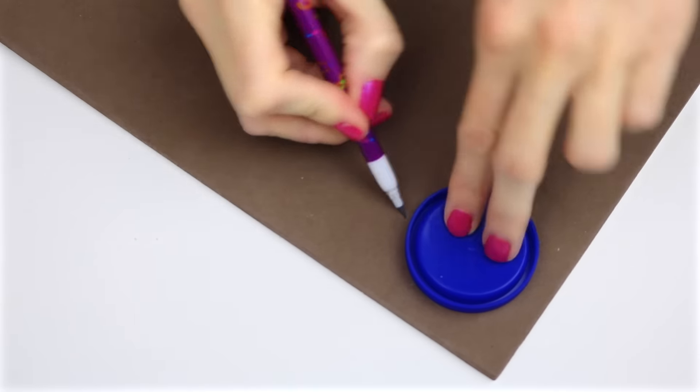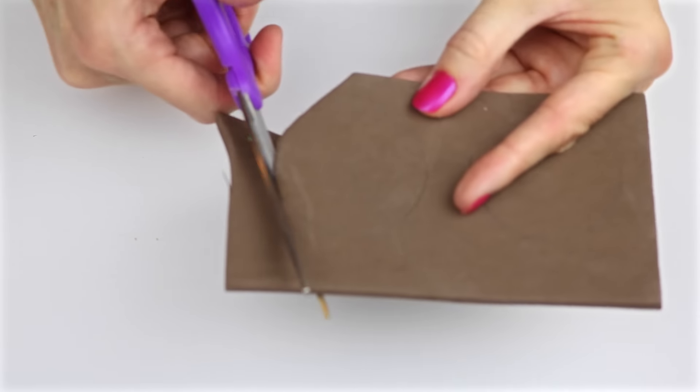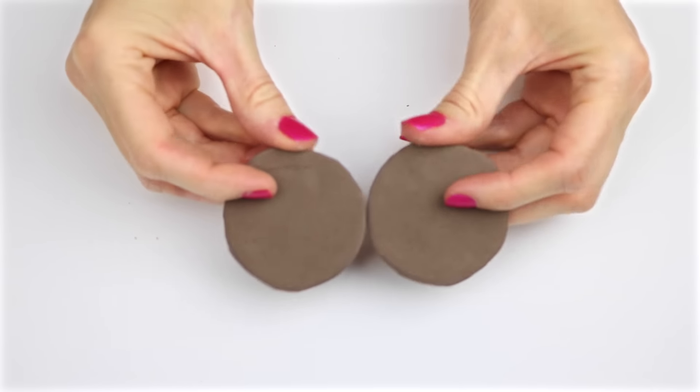To make the hamburger, I'm going to use a thicker piece of brown foam. Use a circle object that will fit on the hamburger. Trace around it and cut it out. You will need two to make the Big Mac.